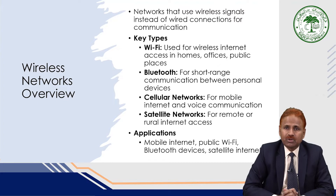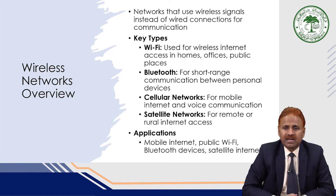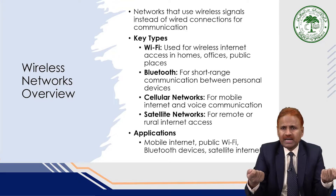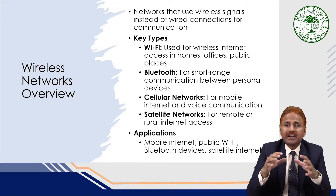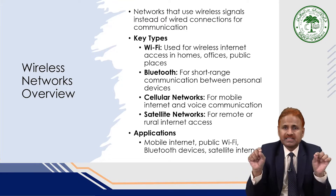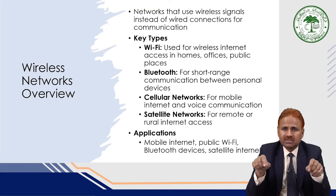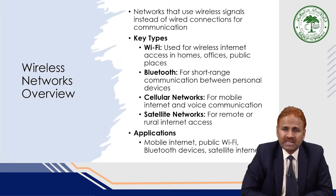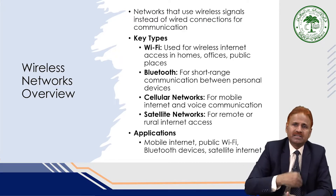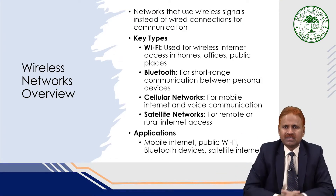Another good example of a wireless network is the cellular network, used for mobile and internet communication, including voice communication for our mobile devices. Mobile devices use signals in the radio waves range — whose frequency lies in the radio wave range — for connecting cellular devices with each other.